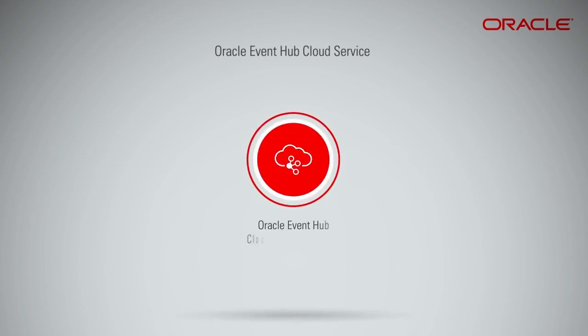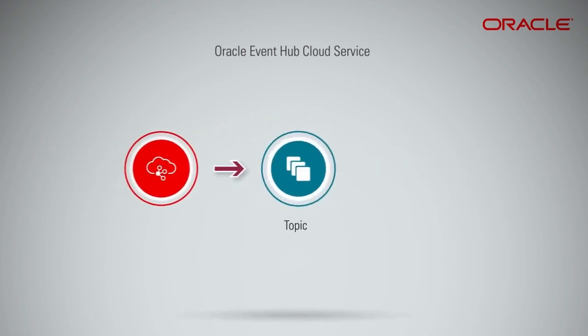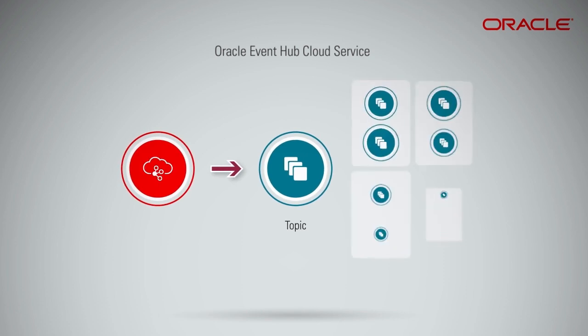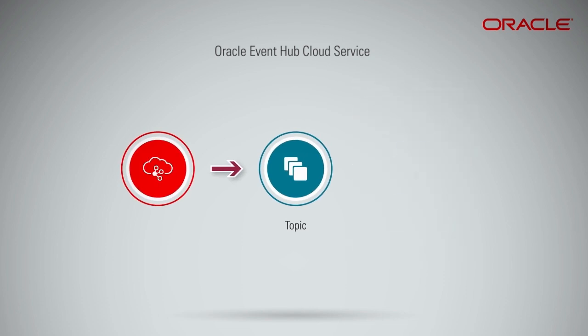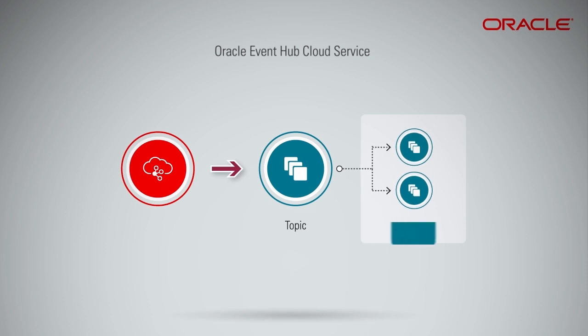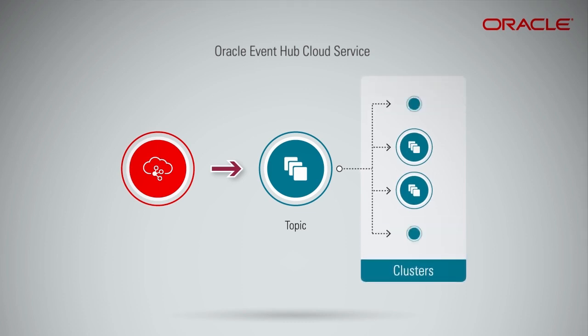An instance of Oracle Event Hub Cloud Service is called a topic. All messages are organized into topics. Topics reside on underlying clusters. One cluster can tenant multiple topics.